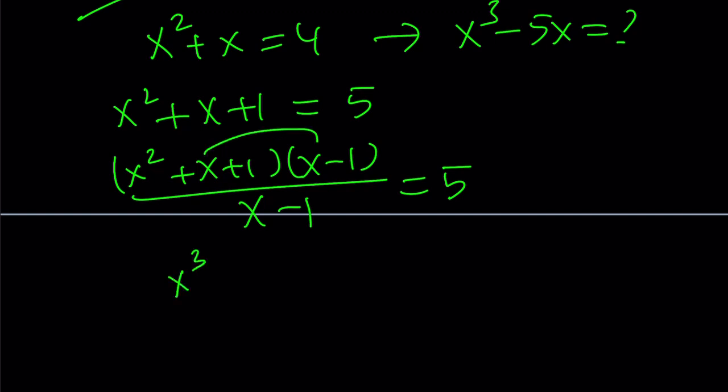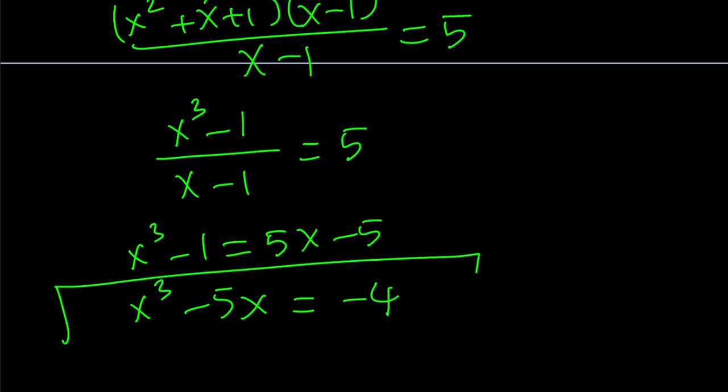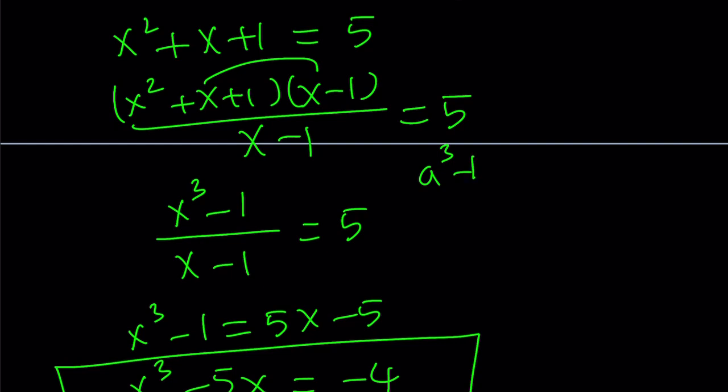And what does this give me? This gives me what I'm looking for. Distribute, cross multiply, and then put the 5x on the left-hand side and add 1 to both sides. And you get what you want. This method is not always easy to see, but always take advantage. If you see x squared plus x or x squared minus x, and if you have an x cubed, always think about sum of 2 cubes and difference of 2 cubes.